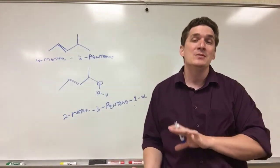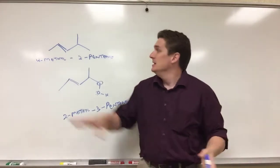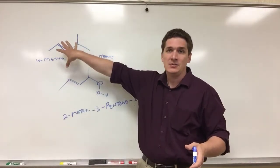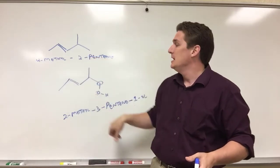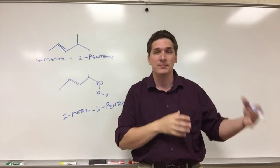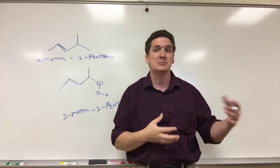So this is how you name even more complicated alkenes. If you have alkane or halogen branches, the double bond takes priority in terms of carbon numbering. If you add an alcohol, the alcohol takes priority over the double bond, which takes priority over the halogens and the alkane branches.